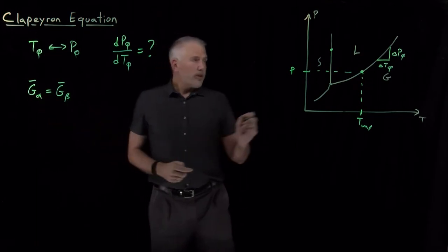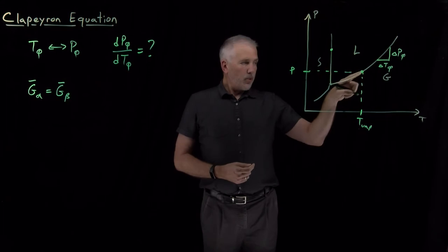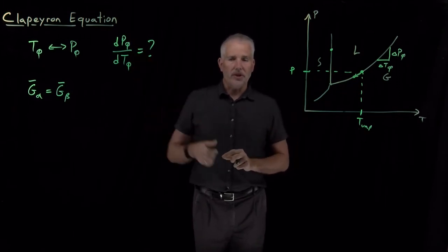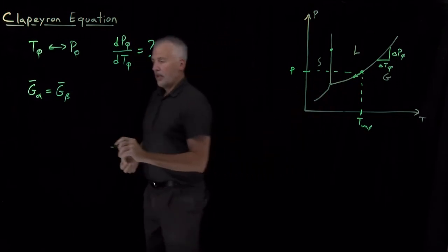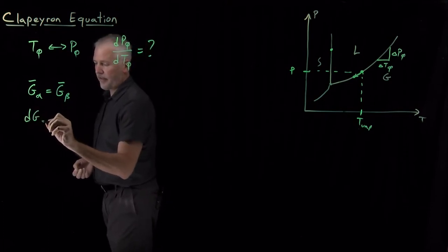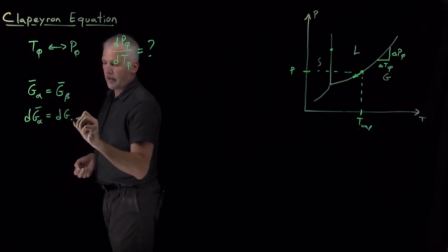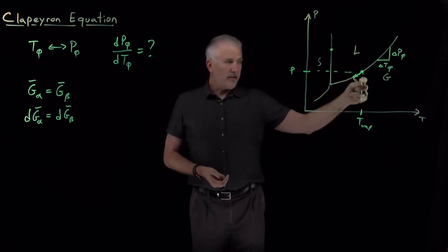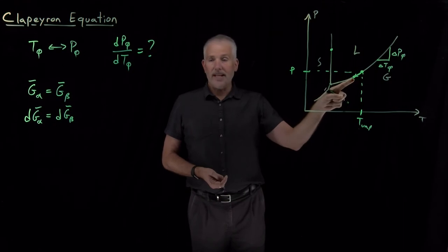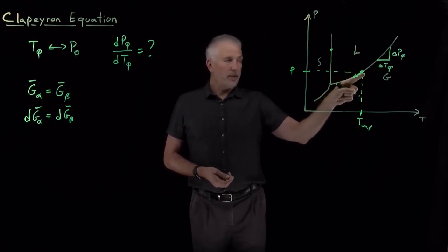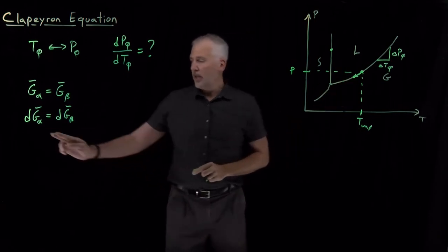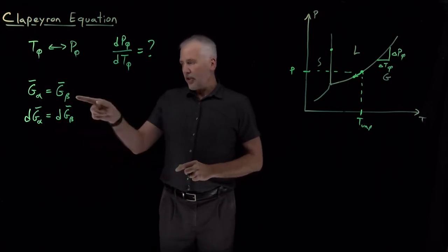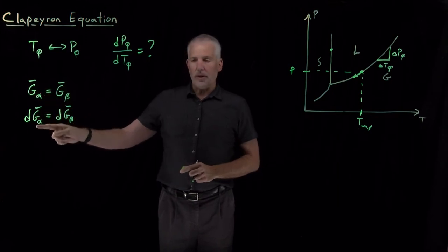We're interested not just in what the free energy is at one particular point on the coexistence curve, but if I travel along that curve to somewhere else, I'm interested in the ratio of how much the pressure changes as the temperature changes. If I modify where I am on that curve, the free energy of the liquid will change and the free energy of the gas will change, but they must remain equal to each other. So the change in Gibbs free energy in phase alpha matches the change in phase beta — mathematically, I've taken the differential: dG_alpha equals dG_beta.